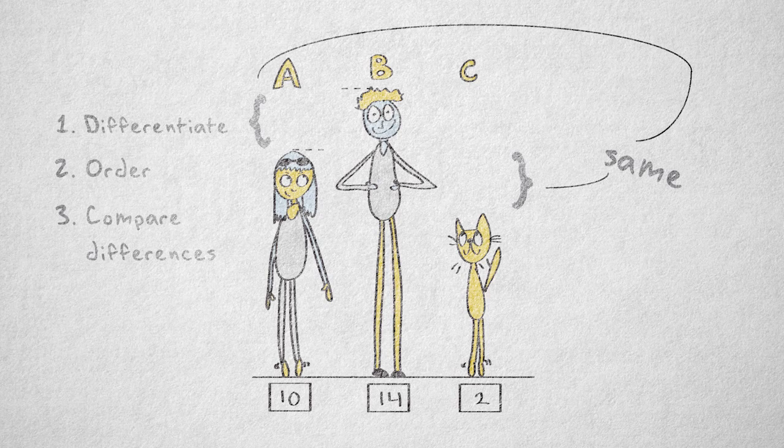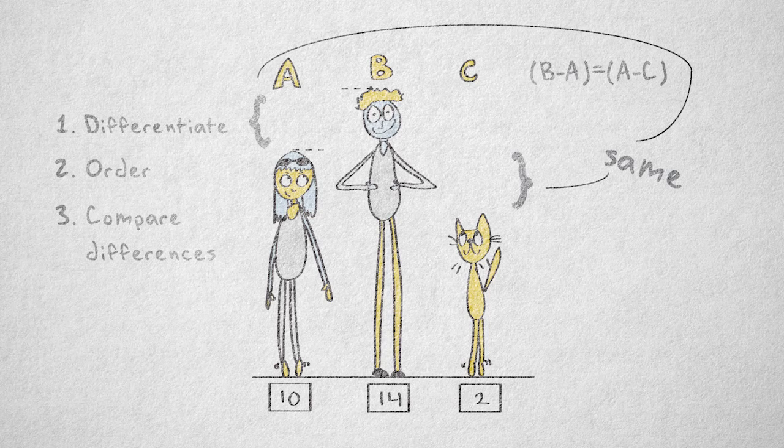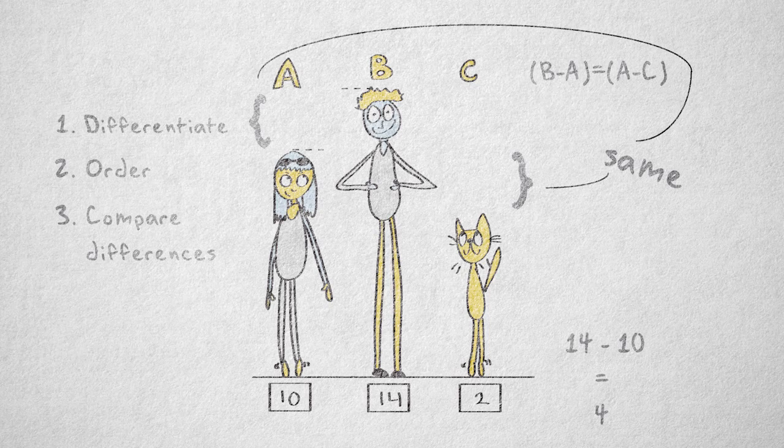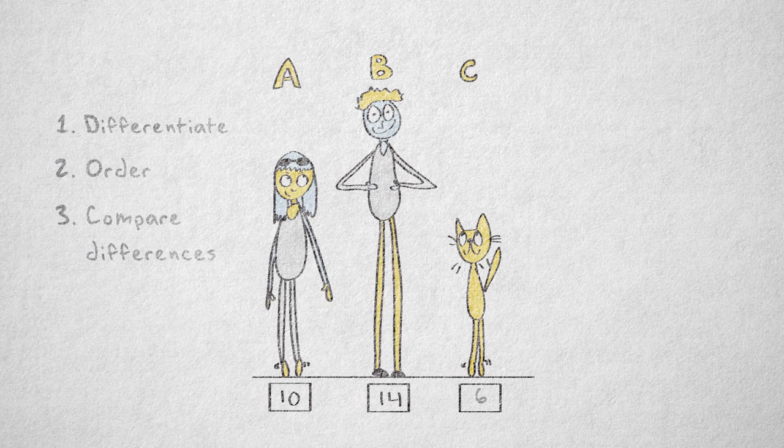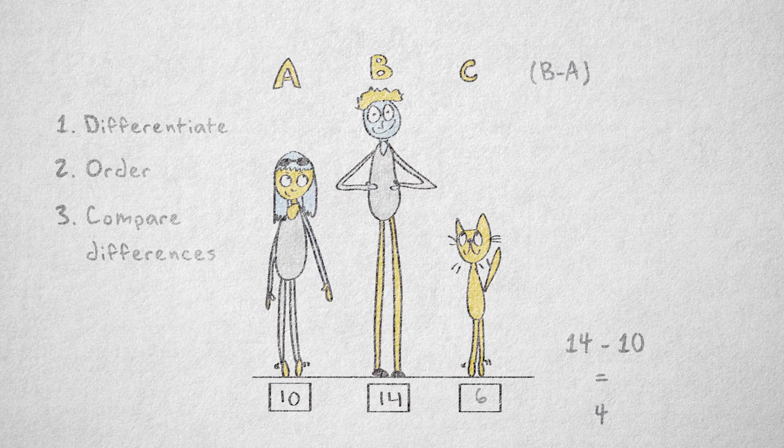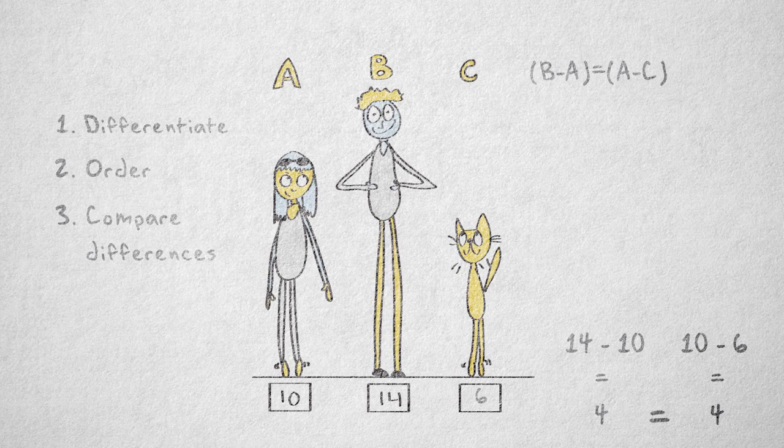We can represent this relation of equal differences by using numbers that differ by the same amount. For example, the difference between the numbers for B and A, 14 and 10, is 4. So we could change the number assigned to C from a 2 to a 6. The equal differences in numbers between B and A, 14 minus 10 is 4, and A and C, 10 minus 6 is 4, now accurately reflect the equal differences in body length between A and B and A and C.